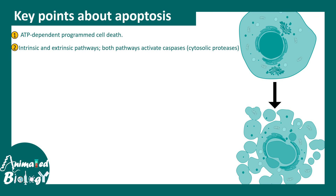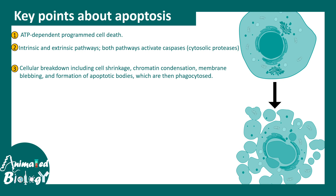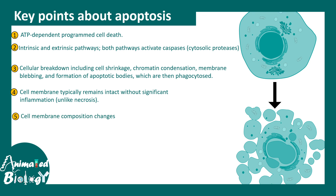The key points of apoptosis are: it is an ATP-dependent programmed cell death pathway with intrinsic and extrinsic pathways, both activating caspases as the key player. Cellular breakdown and shrinkage occur, the membrane blebs out but remains intact, and no inflammation is evoked. The cell membrane lipid composition changes — phosphatidylserine distribution shifts — and DNA laddering occurs, meaning DNA becomes fragmented but remains confined within the blebs.